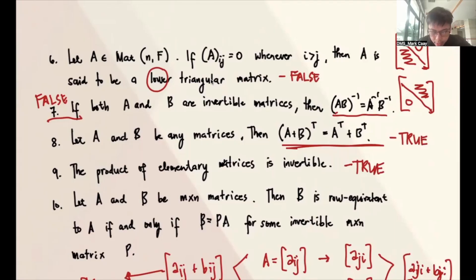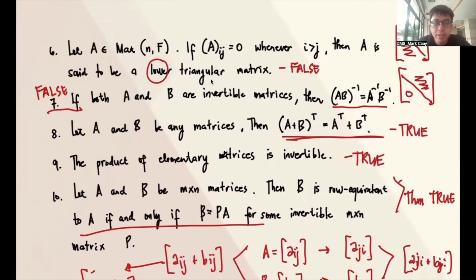And number 10, let A and B be M by N matrices, then B is row equivalent to A if and only if B is equal to P times A for some invertible M by N matrix P. In fact, this is a theorem, and this is true. I have discussed this from my previous video already, so please refer to that about the proof. The proof is completely detailed in the video of invertible matrices.